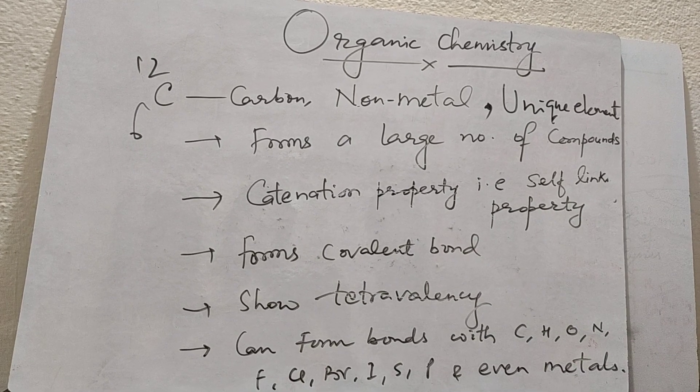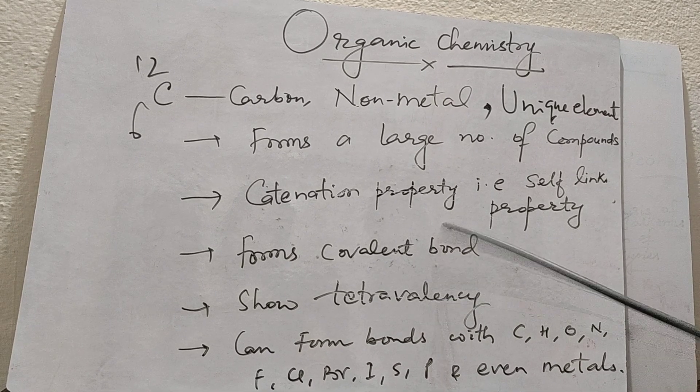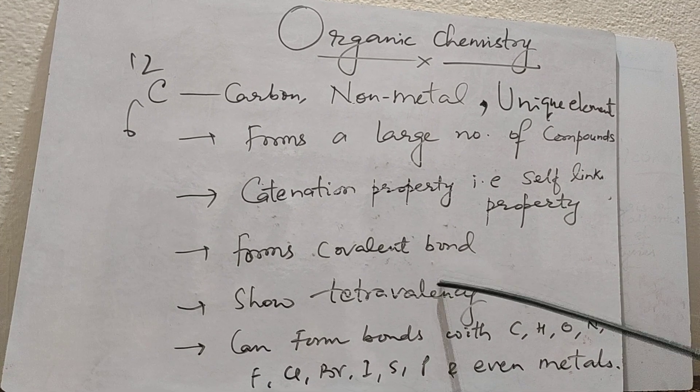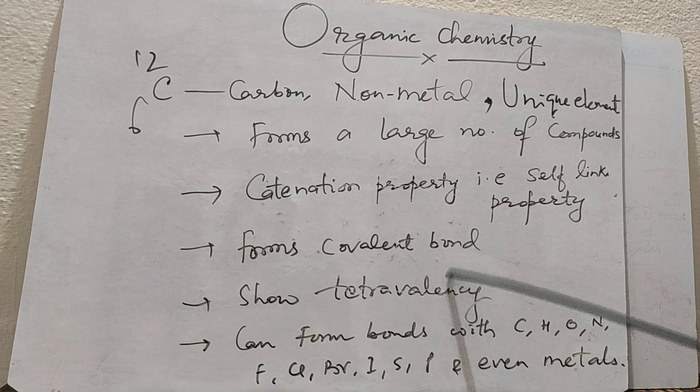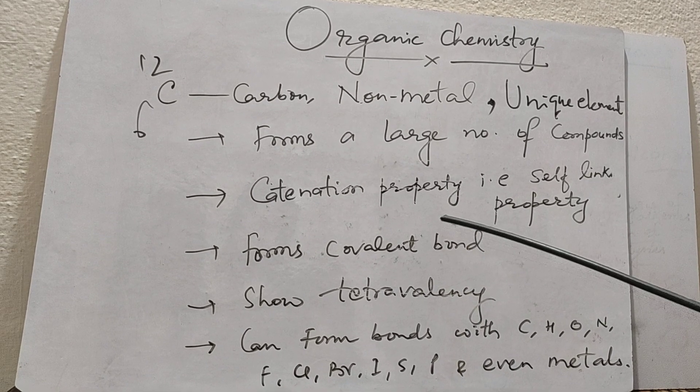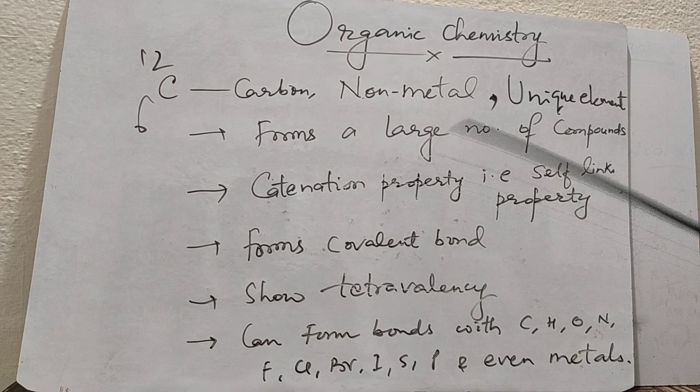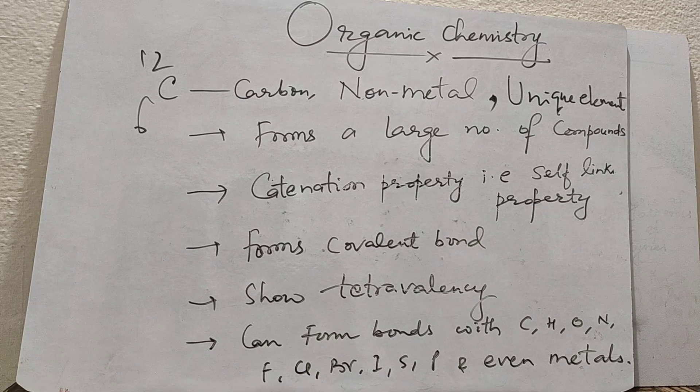It shows tetravalency. That means around carbon there will be 4 bonds. These 4 bonds can be satisfied by 4 atoms, 3 atoms or 2 atoms depending upon whether it is forming single bond, double bond or triple bond.